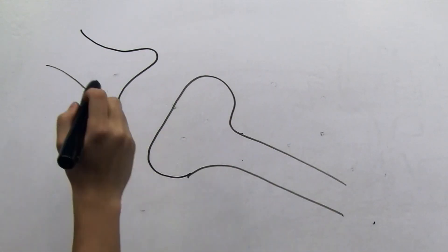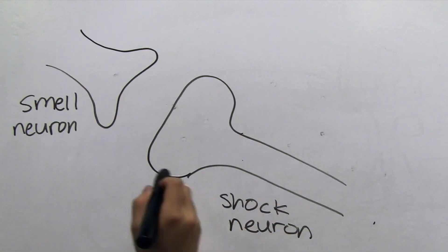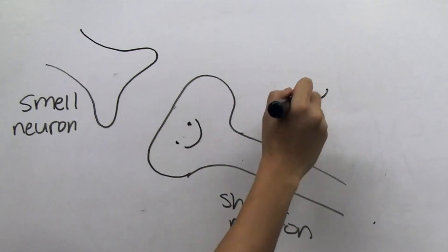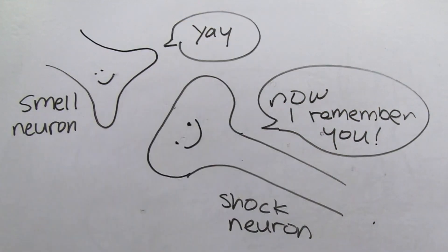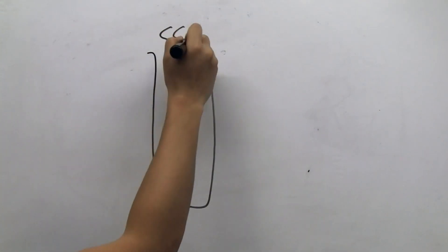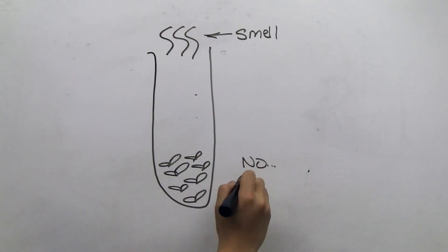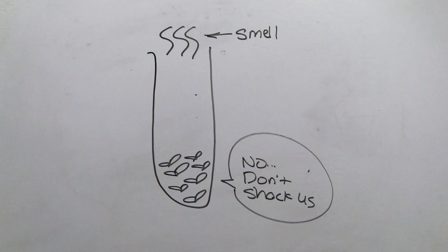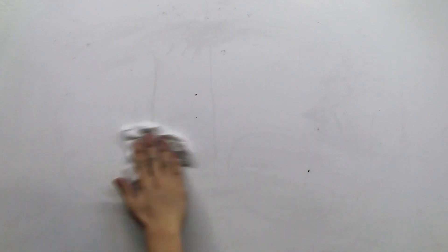Now, when the fly smells this odor again, the neurons will remember the shock as well. So when the flies are around that smell again, they will be expecting a shock and will move to avoid the smell. This is how a memory is formed, through long-term potentiation between neurons.